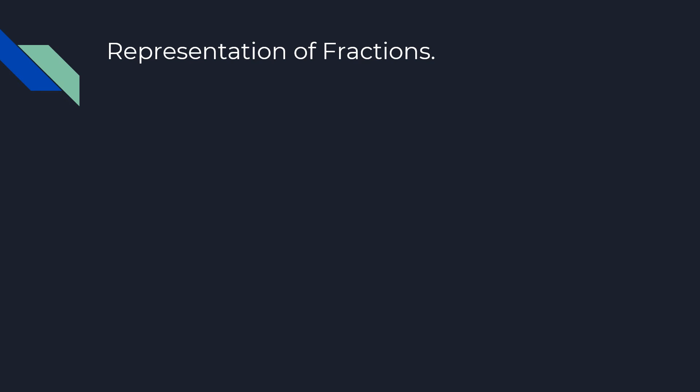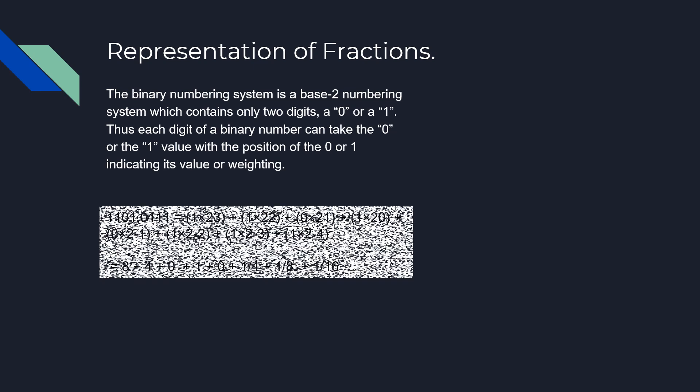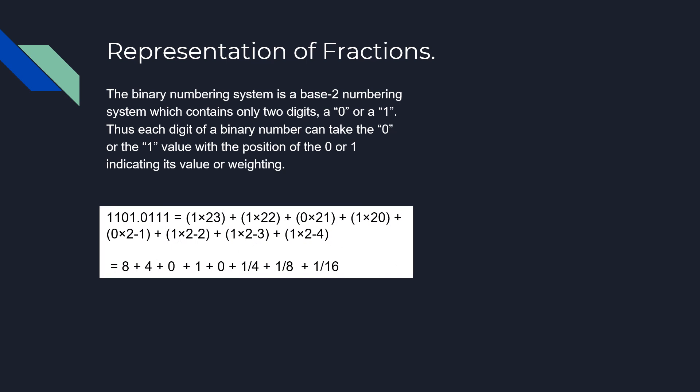Representations of fractions. The binary numbering system is a base-2 numbering system which contains only two digits, 0 or 1. Thus, each digit of a binary number can take the 0 or the 1 value with the position of 0 or 1 indicating its value or weight. You can see an example here and another example on the right side of the slide.